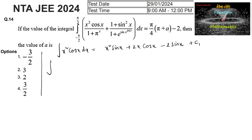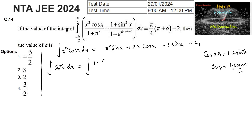Now for ∫ sin²x dx: using the identity cos 2a = 1 − 2sin²a, so sin²a = (1 − cos 2a)/2. Thus ∫ sin²x dx = ∫ (1 − cos 2x)/2 dx = x/2 − (sin 2x)/4 + C₂.